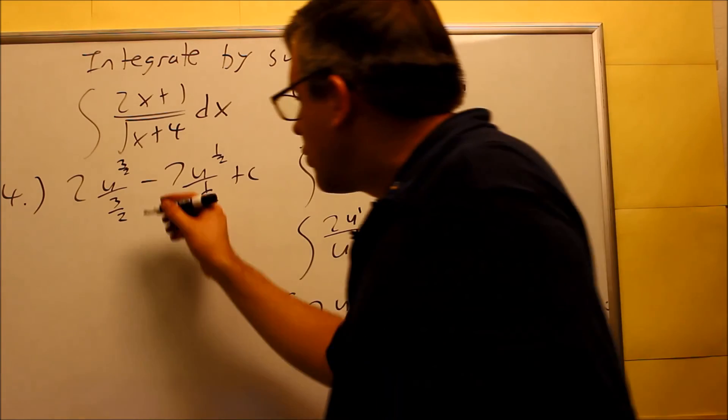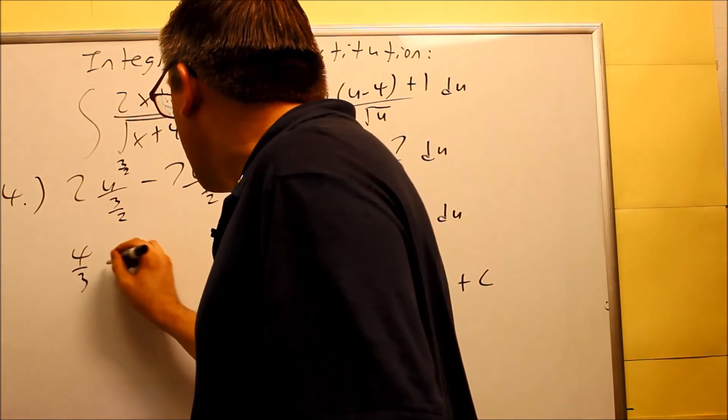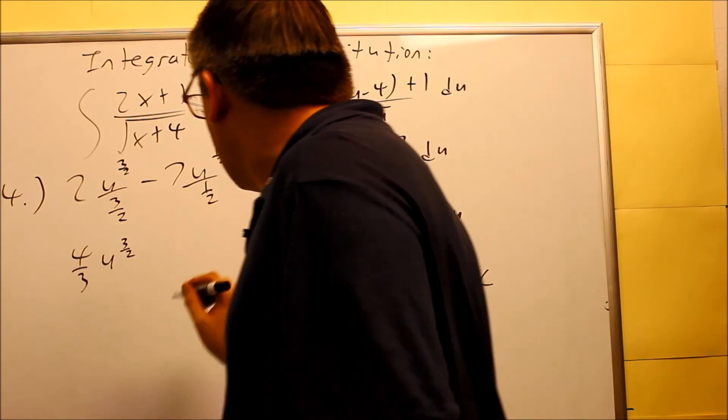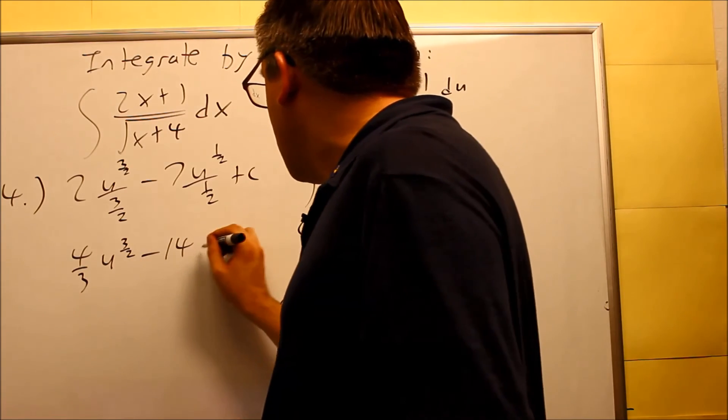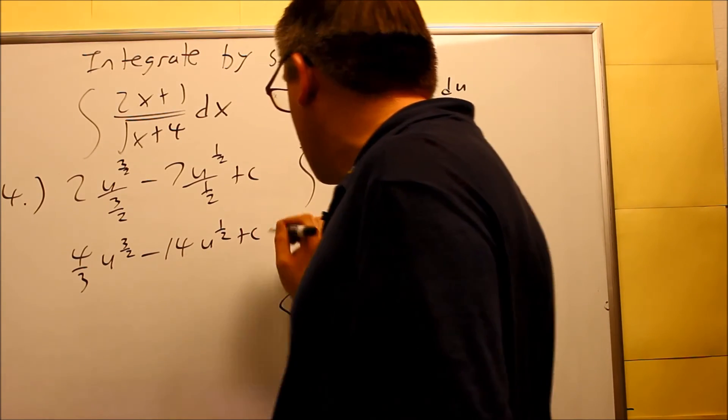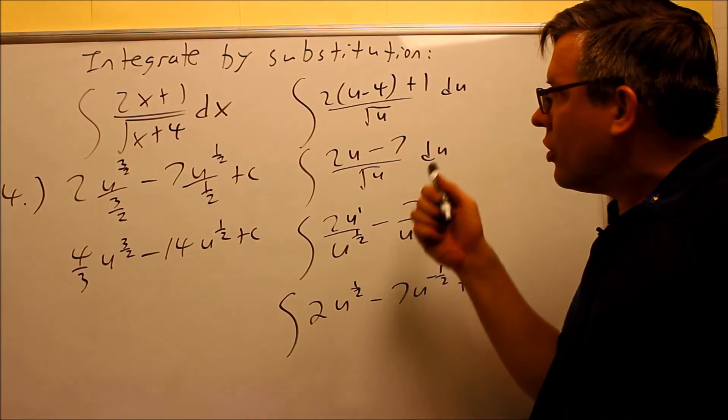So I have to flip the fraction, that's going to be four-thirds U to the 3 halves, flip that, minus 14U to the 1 half plus C, and then finally I'll put the U back in.